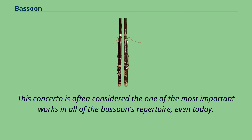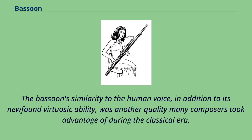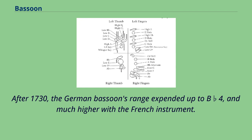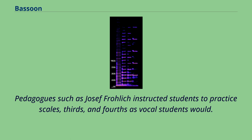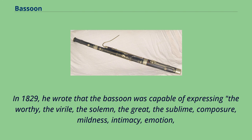The bassoon's similarity to the human voice, in addition to its newfound virtuosic ability, was another quality many composers took advantage of during the classical era. After 1730, the German bassoon's range expanded up to Bb4, and much higher with the French instrument. Technological advances also caused the bassoon's tenor register sound to become more resonant, and playing in this register grew in popularity, especially in the Austro-Germanic musical world. Pedagogues such as Joseph Froelich instructed students to practice scales, thirds, and fourths as vocal students would. In 1829, he wrote that the bassoon was capable of expressing the worthy, the virile, the solemn, the great, the sublime, composure, mildness, intimacy, emotion, longing, heartfulness, reverence, and soulful ardor.